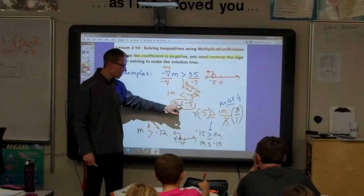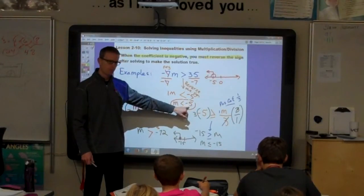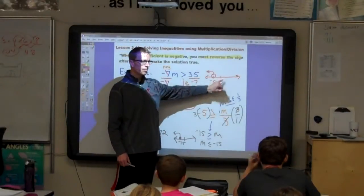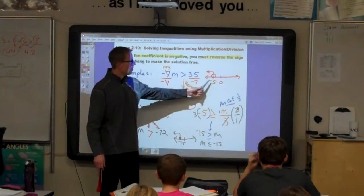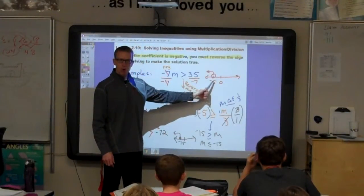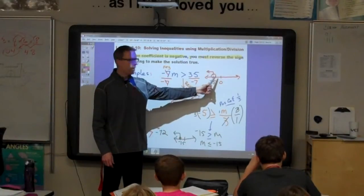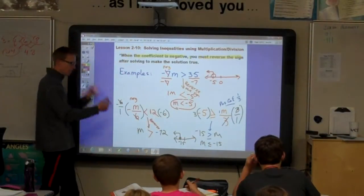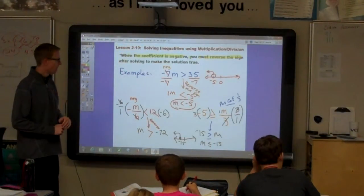So m is less than negative 5. Now, to graph this, we would draw a number line, mark negative 5 with an open dot, and shade to the left. So m is less than negative 5, so we would draw a number line.